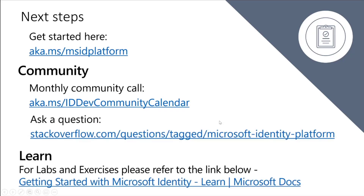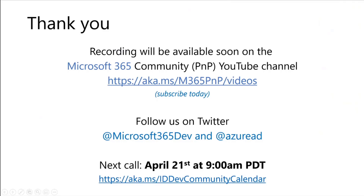The next steps: go to aka.ms/MSIDplatform to get started. We have our monthly community call every third Thursday. You can download the calendar and join all our calls. We have exciting calls lined up for upcoming months. You can always ask a question in the Stack Overflow Microsoft Identity category. This recording will be available in Microsoft 365 PNP/videos. You can get the full schedule of upcoming sessions and all recordings on these Twitter channels. Our next call is on April 21st.